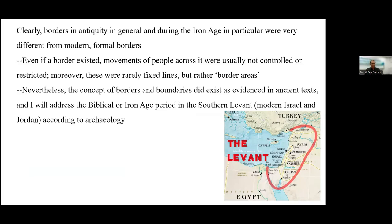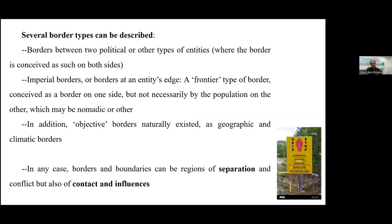I think there is clearly a concept of borders and boundaries in antiquity, as ancient as evidenced in ancient texts. I specifically relate to the biblical period and biblical texts, the Iron Age in the southern Levant, and mostly the archaeological evidence of borders. Generally, we can define several border types. Borders can be between two political entities, where on both sides they are conceived as borders — people are aware of that from both sides. But they can also be more unilateral, like imperial borders — borders at an entity's edge or frontier type of border, conceived as a border on one side only.